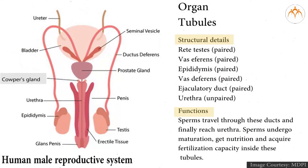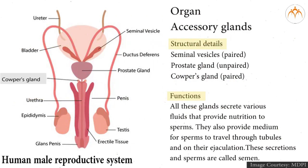Tubules: rete testes (paired), epididymis, vas deferens (paired), ejaculatory duct (paired), urethra (unpaired). Sperms travel through these ducts and finally reach the urethra. Sperms undergo maturation, get nutrition, and acquire fertilization capacity inside these tubules.